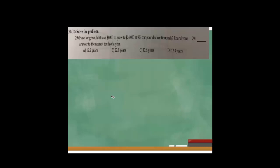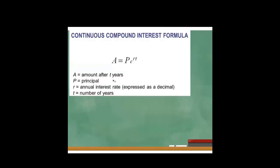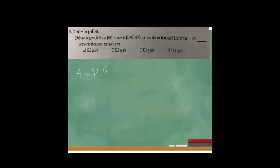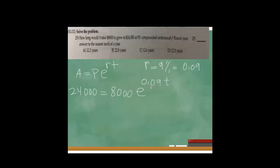How long would it take $8,000 to grow to $24,000 at 9% compounded continuously? Round to the nearest tenth of a year. The formula is A equals P times e to the power of rt, where A is the amount, P is the principal, r is the rate, and t is the time in years. Here A is $24,000, P is $8,000, and r is 9% or 0.09. Dividing both sides by 8,000 gives 3 equals e to the power of 0.09t.